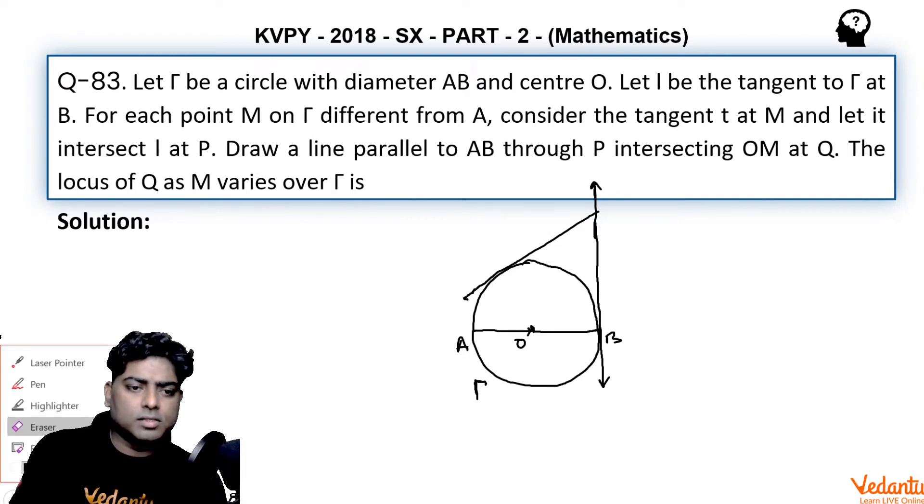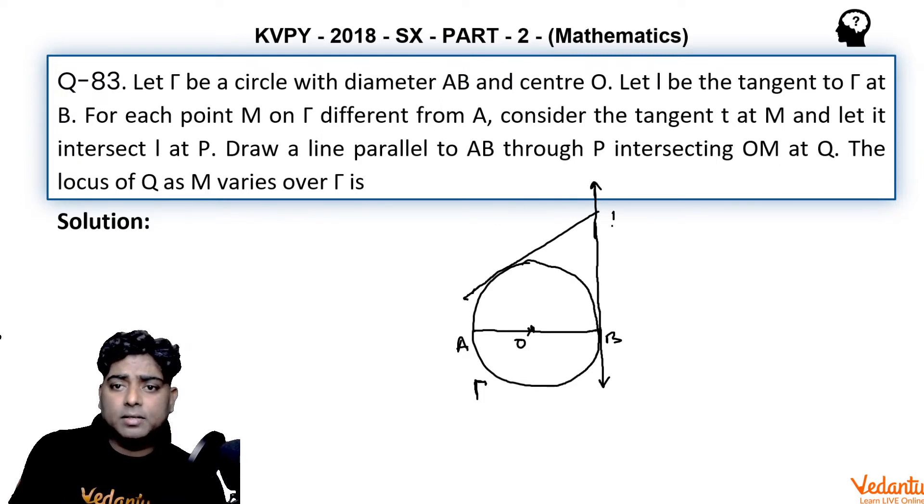This is point M. Let it intersect I at P. This is point P. This is the tangent I defined, and this point is M.